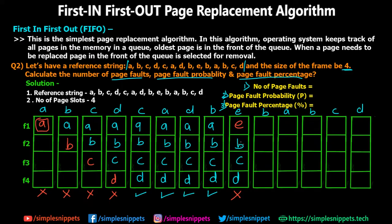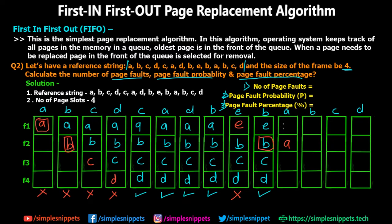Next, B is requested and is already in memory, so no page fault — frames are now E, B, C, D. After that, A is requested. A is no longer in memory because we replaced it with E. So A must be brought back, but all frames are full. After A, B was loaded second and has remained through all steps, so B is swapped out and A is loaded in its place. E, C, D remain as is. This is a page fault.